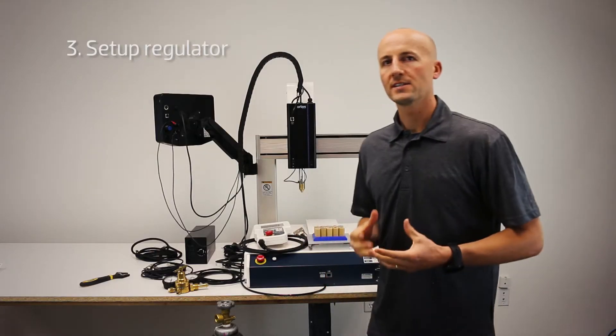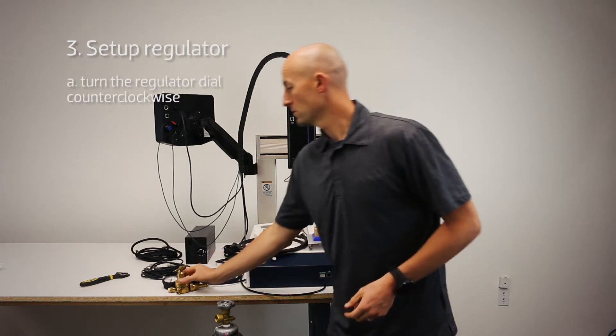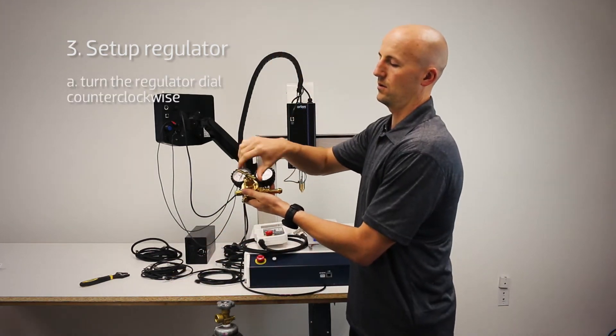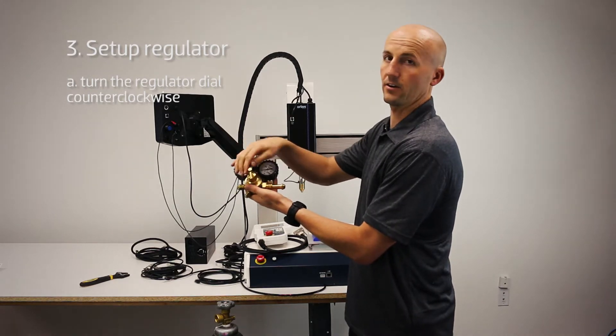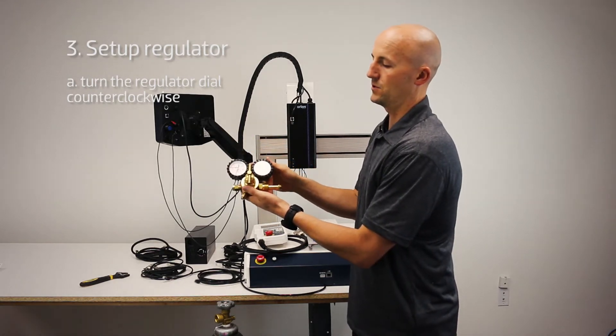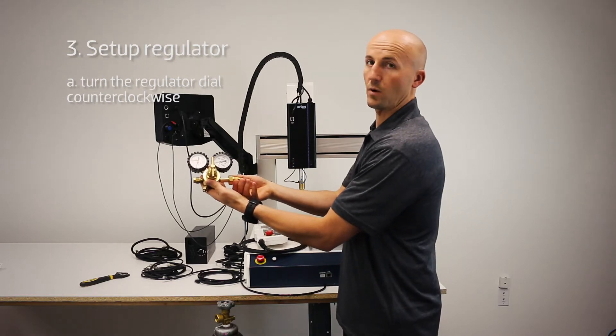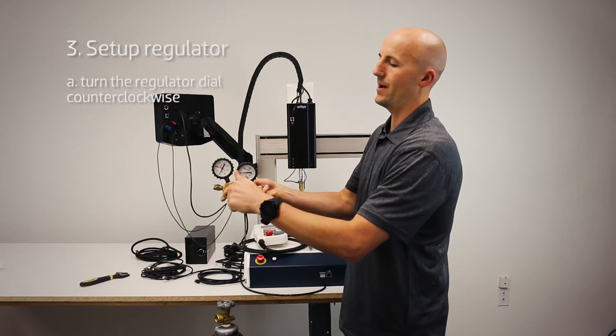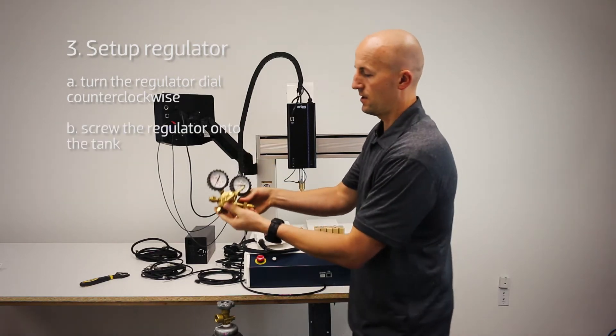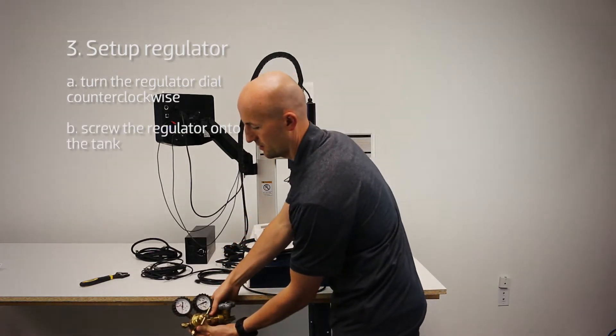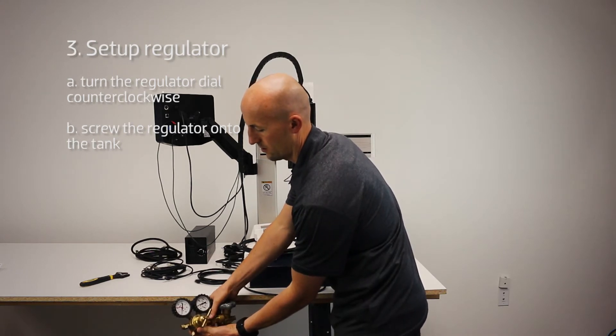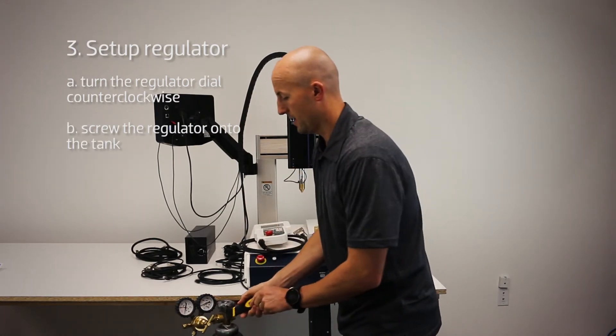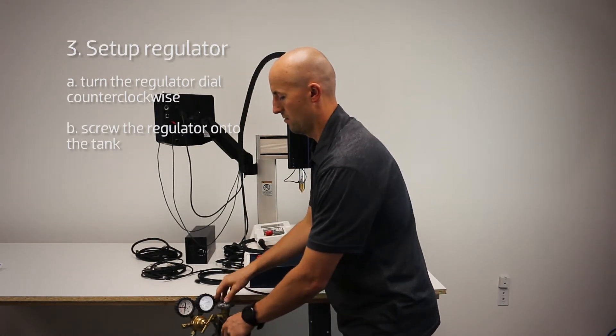Now we're going to set up the argon regulator. First, unscrew the regulator dial counterclockwise so that when you screw this part onto the argon gas tank it doesn't pressurize. With this all the way backed out, put this on your argon gas tank and secure it tight with a wrench.